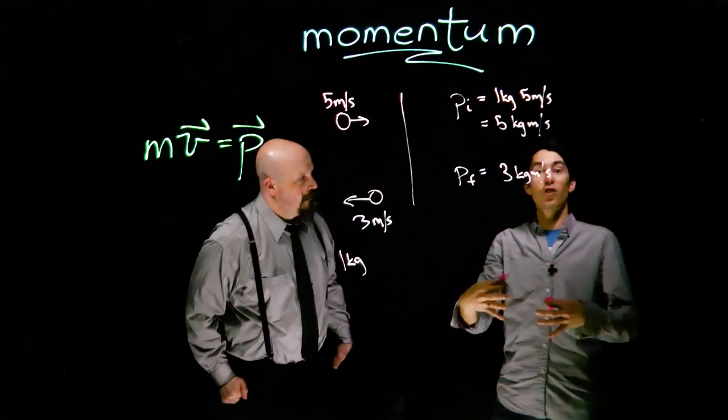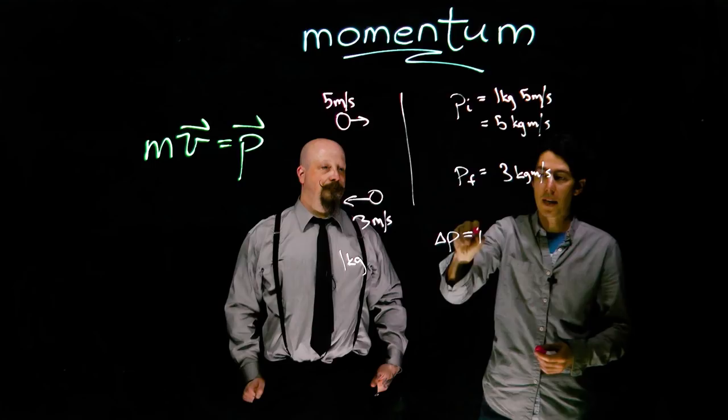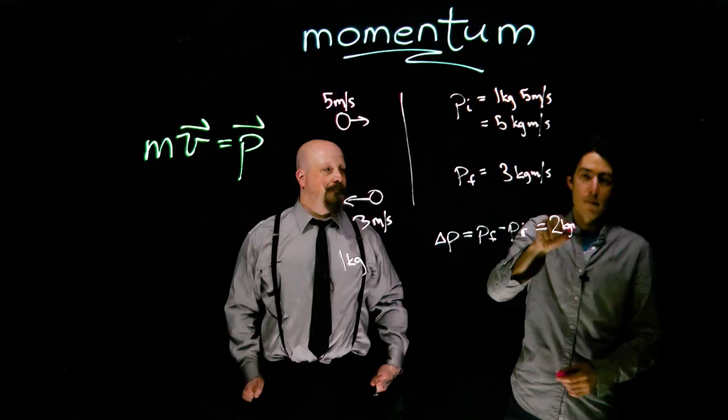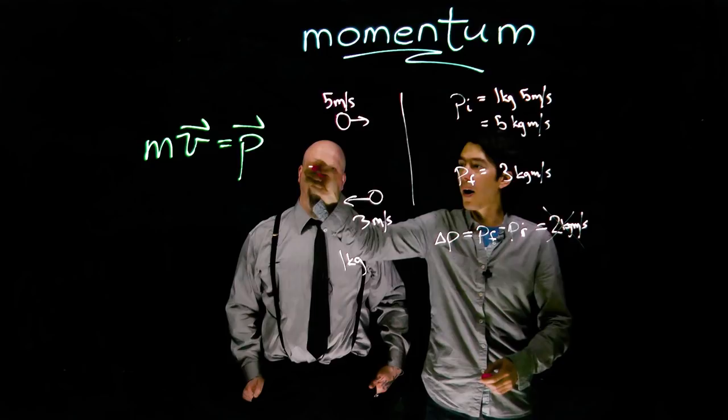Suppose you were asked, what's the change in momentum of the ball during that collision? We could say delta p, p final, minus p initial. And if we forget the fact that momentum is a vector, we might just say, well, 5 minus 3 is equal to 2. But direction matters here, so this is not going to be correct.